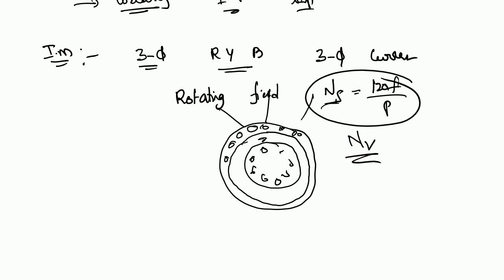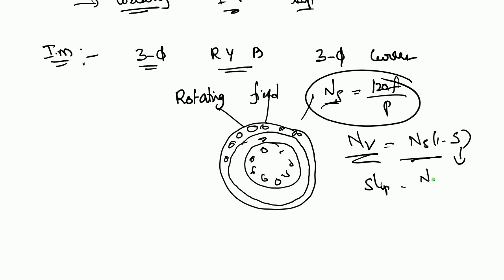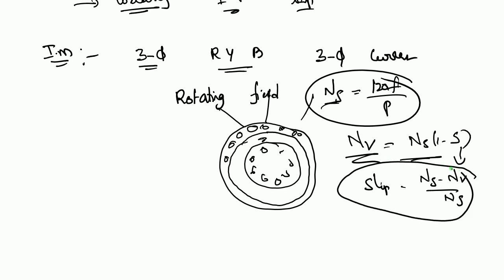The rotor runs at speed N_r and the stator field rotates at synchronous speed N_s. The rotor formula is N_r equals N_s into (1 minus s), where s is the slip. Slip is equal to (N_s minus N_r) divided by N_s. The rotor frequency is F_r equals s into f.